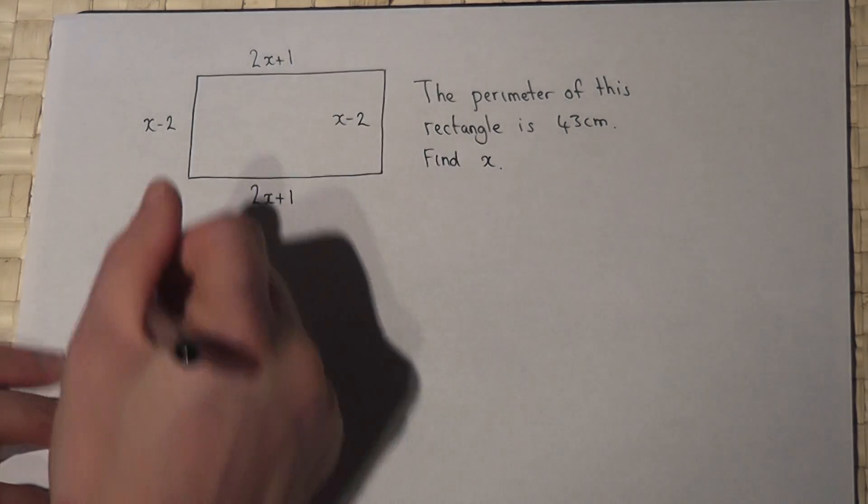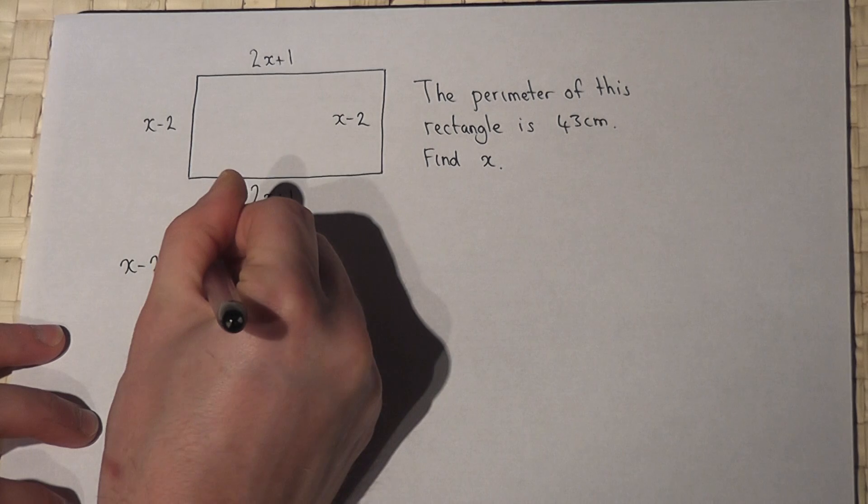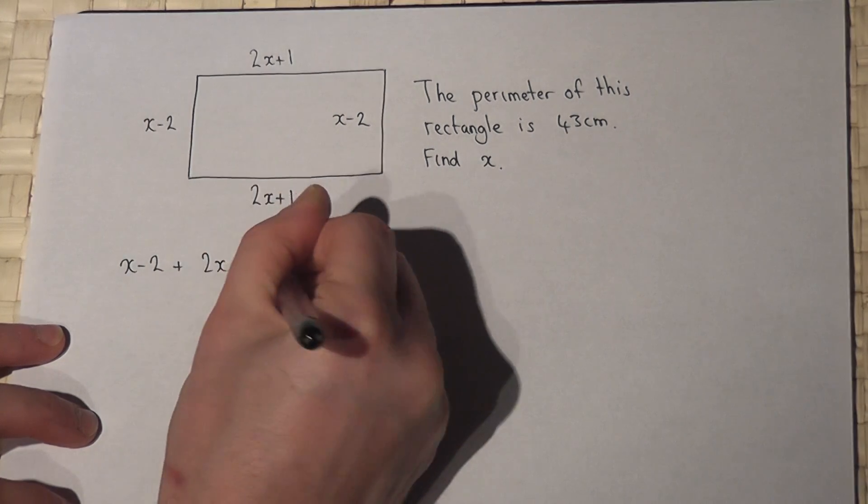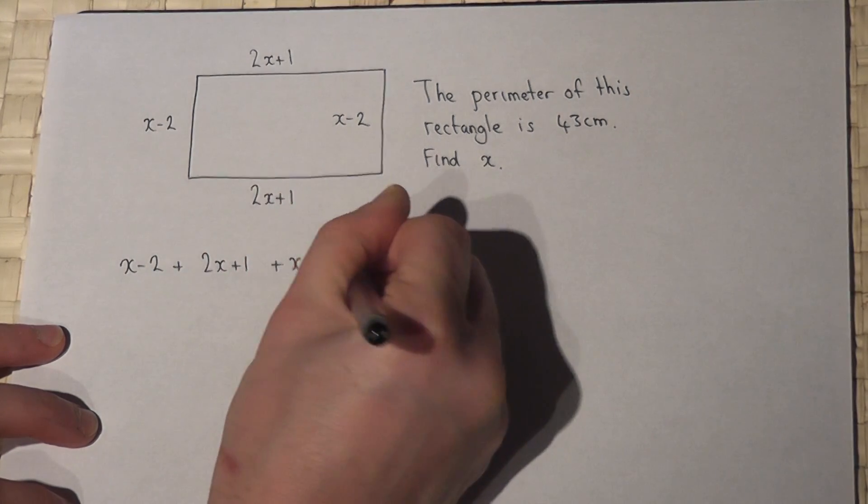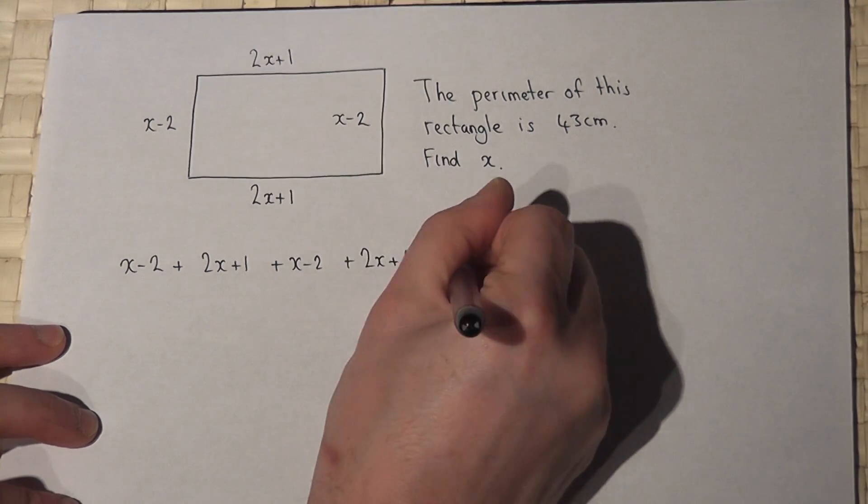So I can set an equation up: x minus 2 plus 2x plus 1 plus x minus 2 plus 2x plus 1 must equal 43.